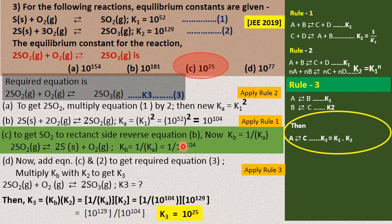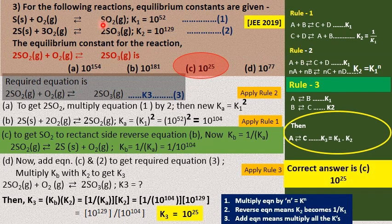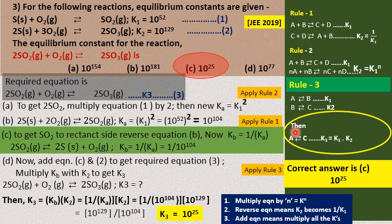So K₃ = 10²⁵ is the answer for this JEE 2019 question. To summarize: we applied rule 1 (reversal gives 1/K), rule 2 (multiply equation by N gives Kᴺ), and rule 3 (add equations, multiply their equilibrium constants). These three rules are extensively used in solving equilibrium problems.